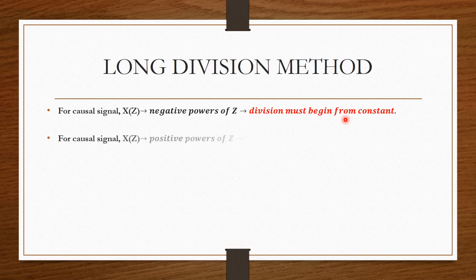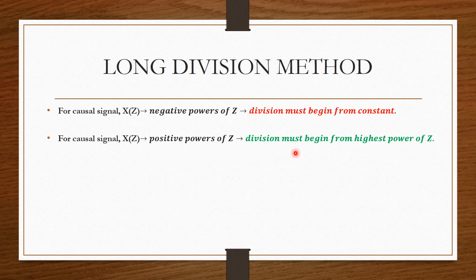For a causal signal, if X of Z is expressed in positive powers of Z, then division must begin from the highest power of Z. For example, if you have the term Z cube plus Z square plus 1, we have to divide starting from Z cube, which is the highest power of Z.